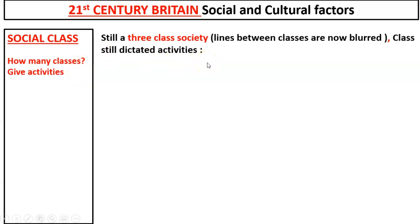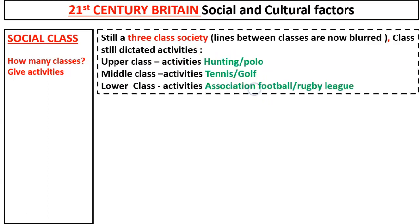We need to know how many classes there are and give activities linked to each class, with a focus on lower or working class. For upper class, we can use hunting or polo. Middle class — tennis and golf. Lower class — association football or rugby league. Polo is a nice addition for upper class, something that would have been present in the 20th century as well.